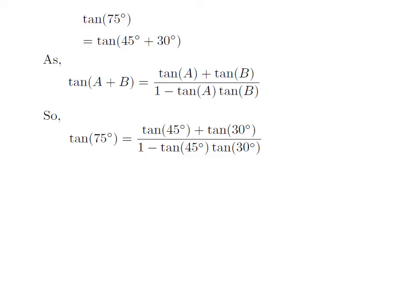So, tan(75°) = tan(45° + 30°) = [tan(45°) + tan(30°)] divided by [1 + tan(45°) × tan(30°)].